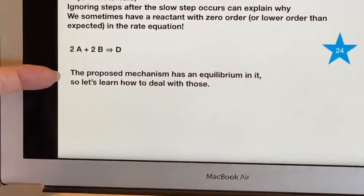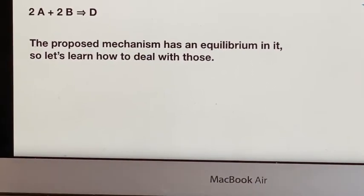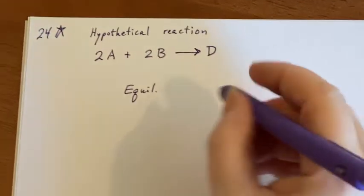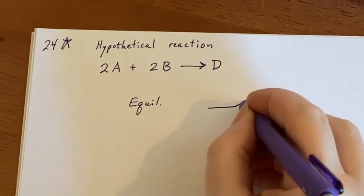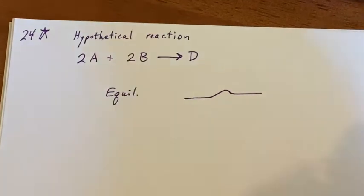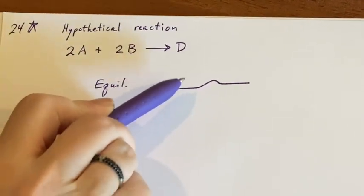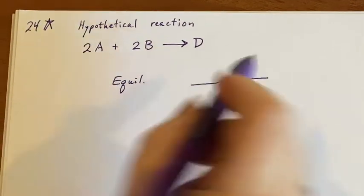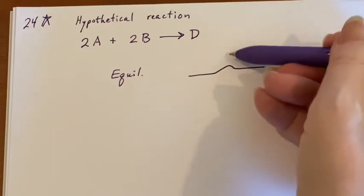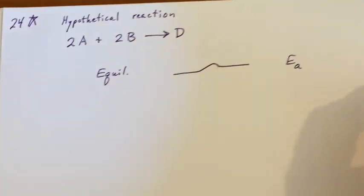The proposed mechanism has an equilibrium in it. Equilibrium could happen when there's not much activation energy between the two sides. No matter how you view this, whether you view it going this way and look at how high the bump is, or from this way, there is not very much activation energy.